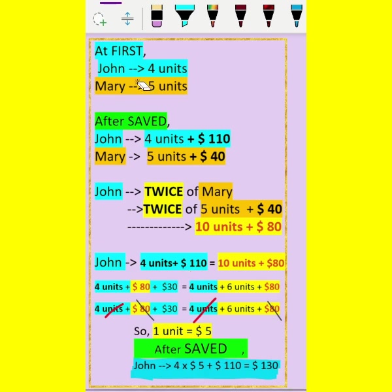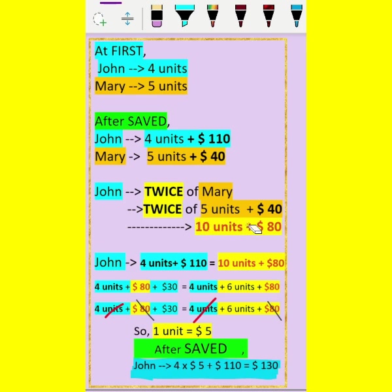At first, John has 4 units and Mary has 5 units. After saving, John had 4 units plus $110 and Mary had 5 units plus $40, and John is twice of Mary. So twice of 5 units plus $40 is 10 units plus $80. Now we equate John in blue